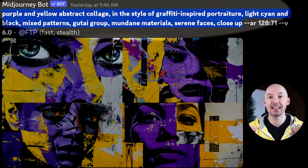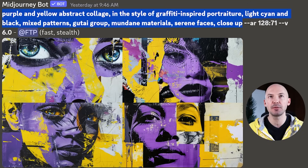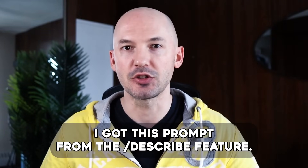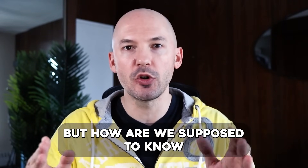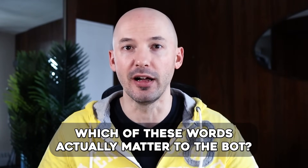Take a look at these pictures and this prompt: 'Purple and yellow abstract collage in the style of graffiti inspired portraiture. Light cyan and black. Mixed patterns. Gutai group. Mundane materials. Serene faces. Close up.' I got this prompt from the describe feature, but how are we supposed to know which of these words actually matter to the bot?